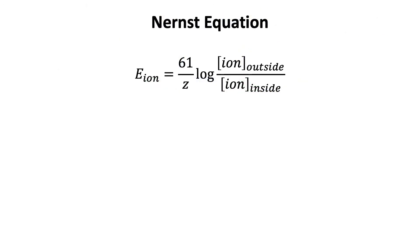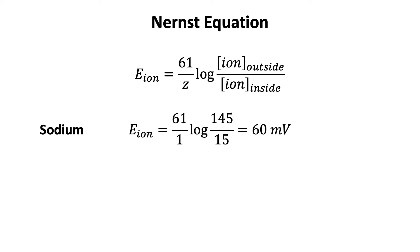The gradients acting on the ion will always drive the ion towards equilibrium. The equilibrium potential of an ion is calculated using the Nernst equation. The constant 61 is calculated using values such as the universal gas constant and temperature of mammalian cells. Z is the charge of the ion being used, and the intracellular and extracellular concentration values for that ion must be known. For sodium, Z, the charge of the ion, is 1; the extracellular concentration is 145 millimolar, and the intracellular concentration is 15 millimolar. This calculates an equilibrium potential of 60 millivolts.